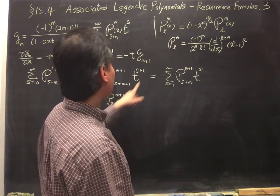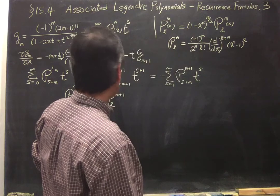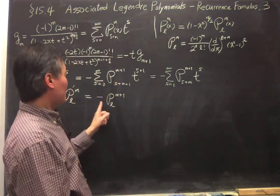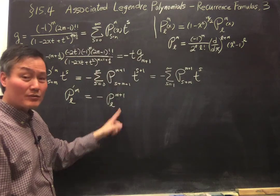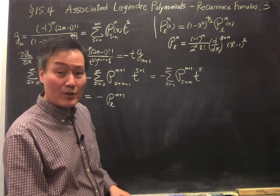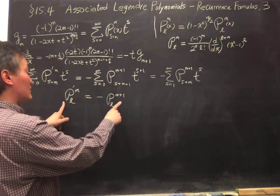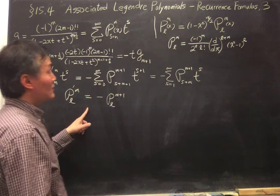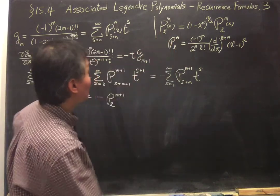So if you change that to m+1, this will give you one more derivative. So basically, we take the derivative, will give you, except for the one negative sign, will give you P_{l,m+1}. And that's our starting point. And we can use that to get the recurrence formula for the associated Legendre function using this definition.